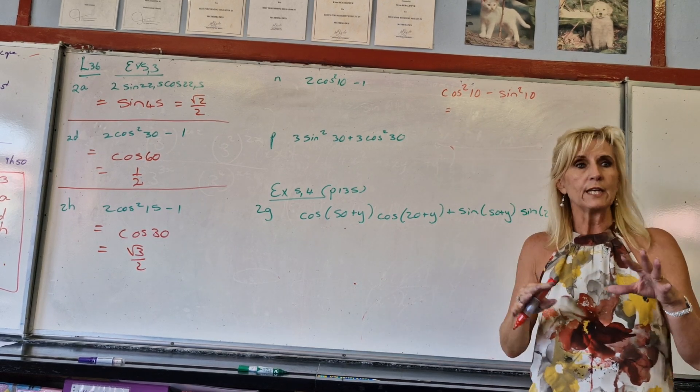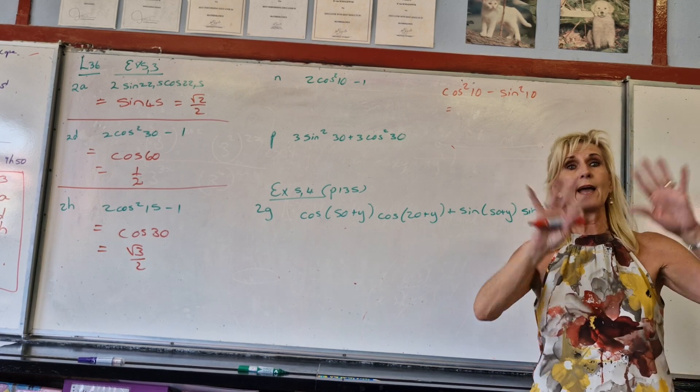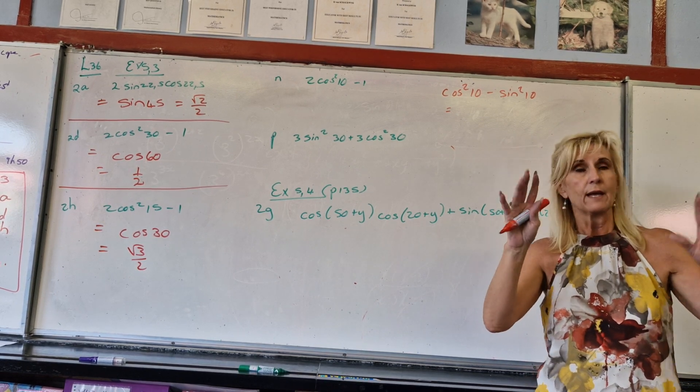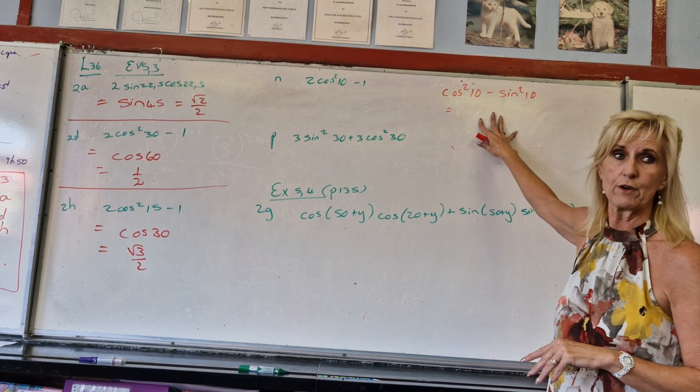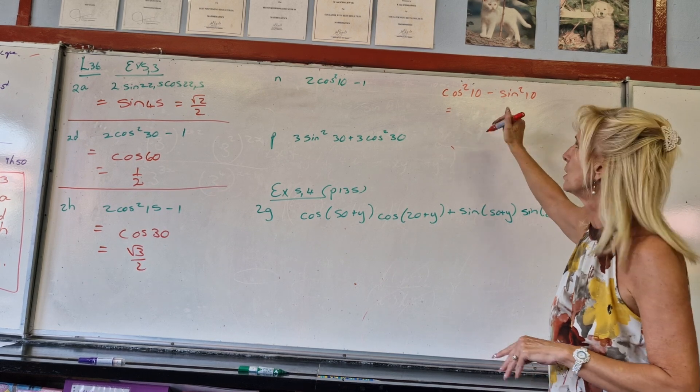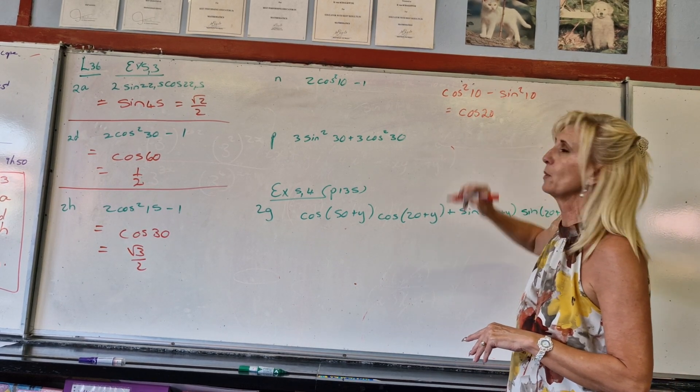For all of them you need to recognize that they're not going to jump out and say, hey, here I am, do you see me? You've got to see it for yourself and know that this is a cos double angle which would be cos of double 10 which would be 20.